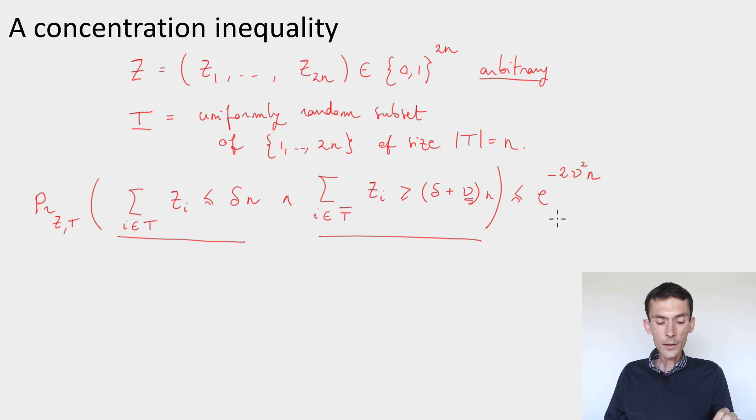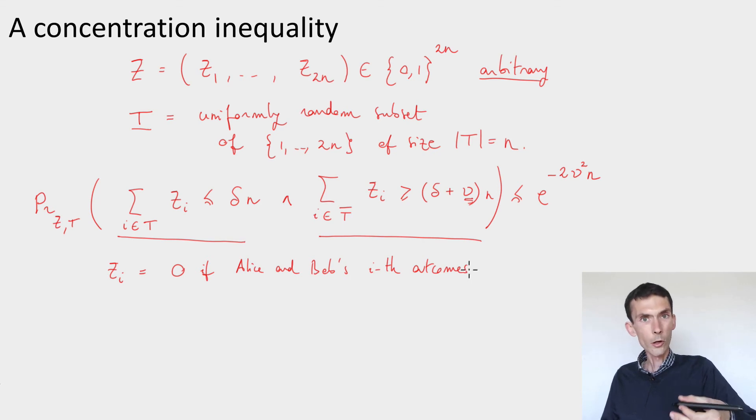So you can already see how this inequality will be applied in the analysis of the BB84 protocol. The idea is to set up a special variable zi. zi will be equal to 0 if Alice and Bob's ith outcomes, for those rounds that were not discarded, so when their basis choice is the same, agree,